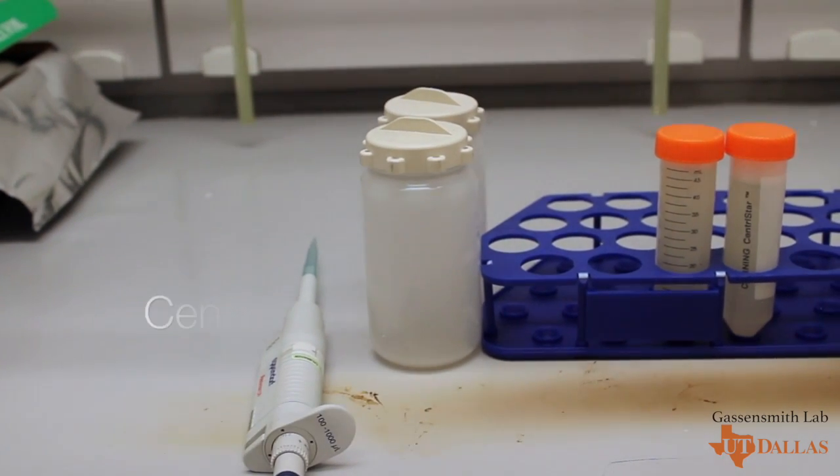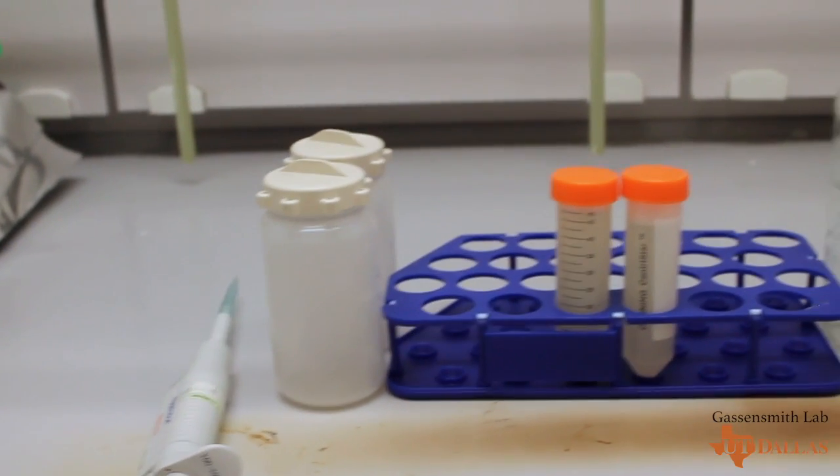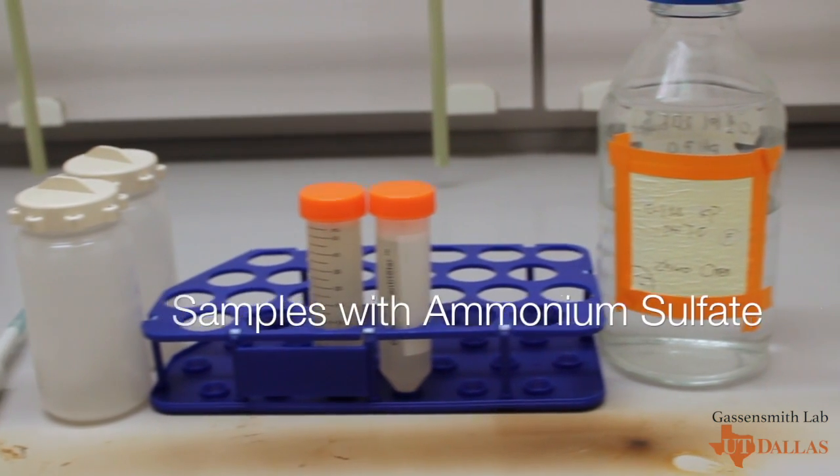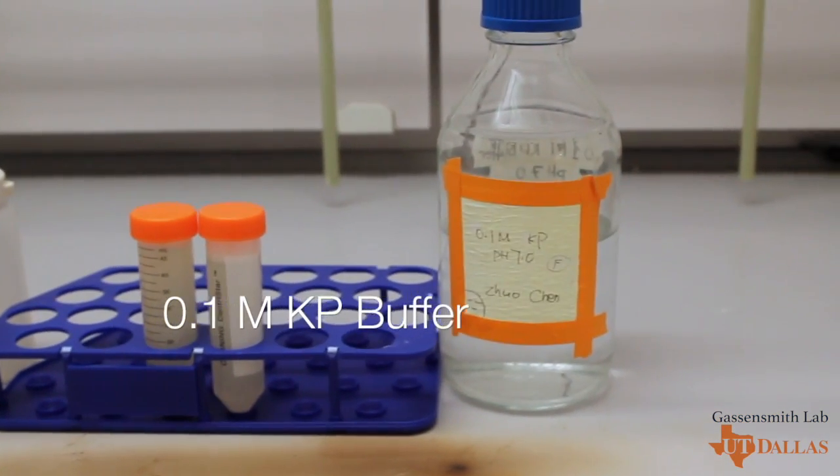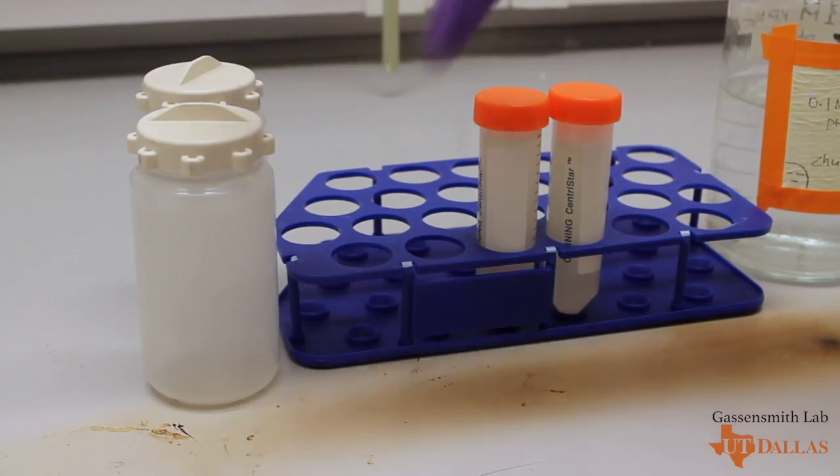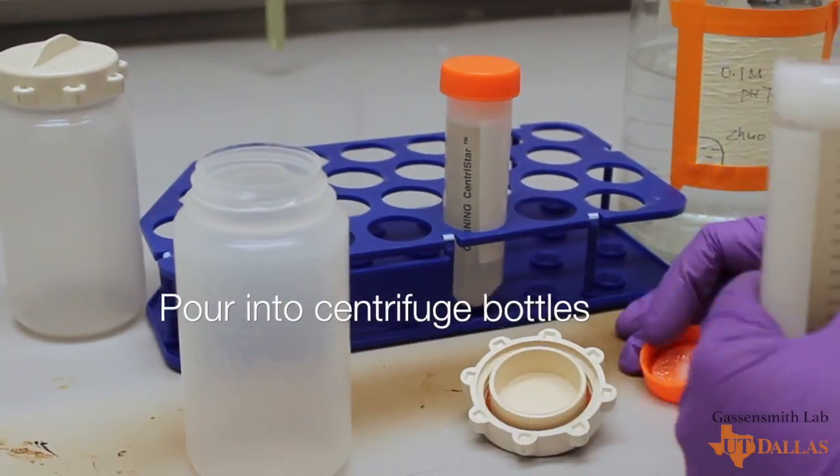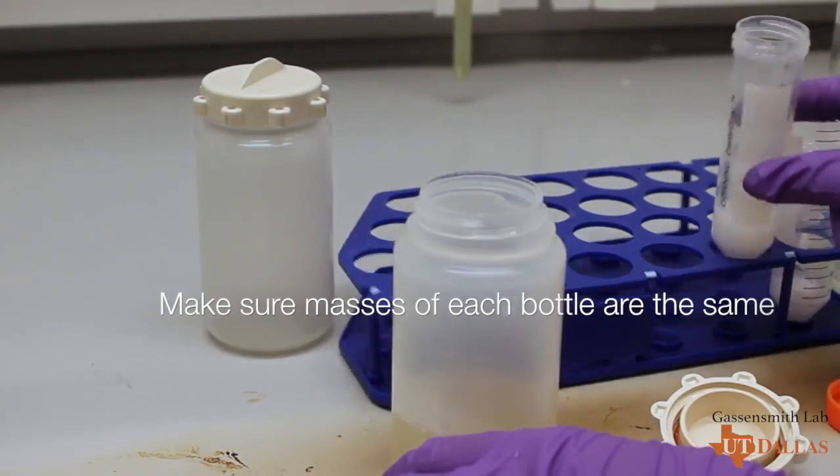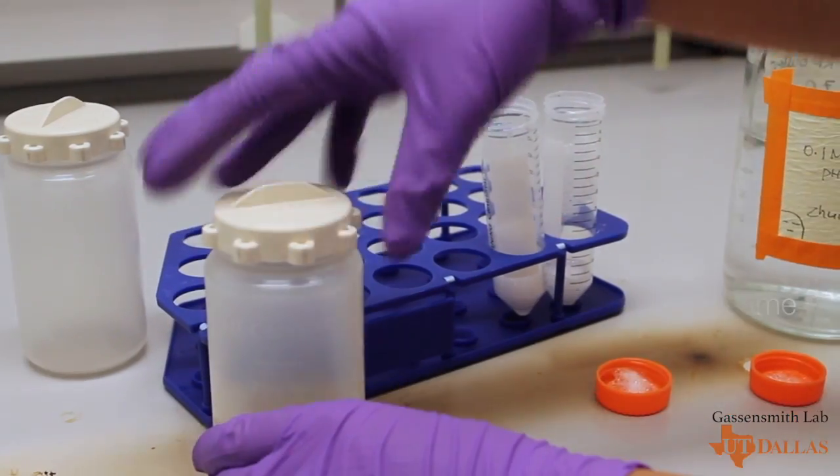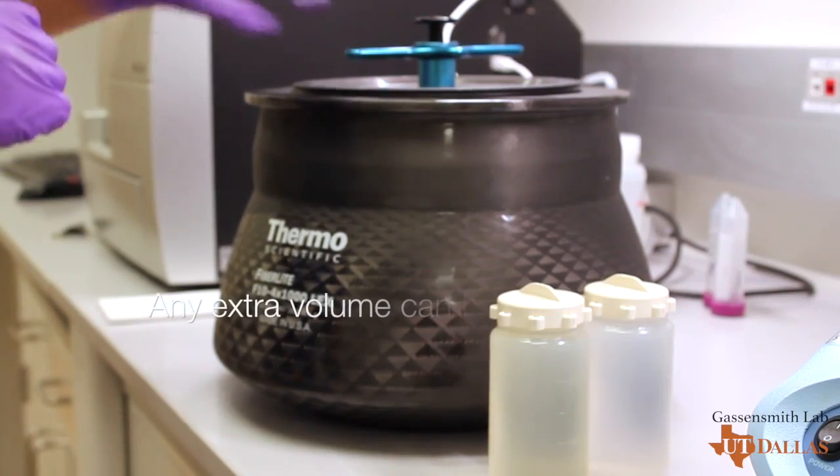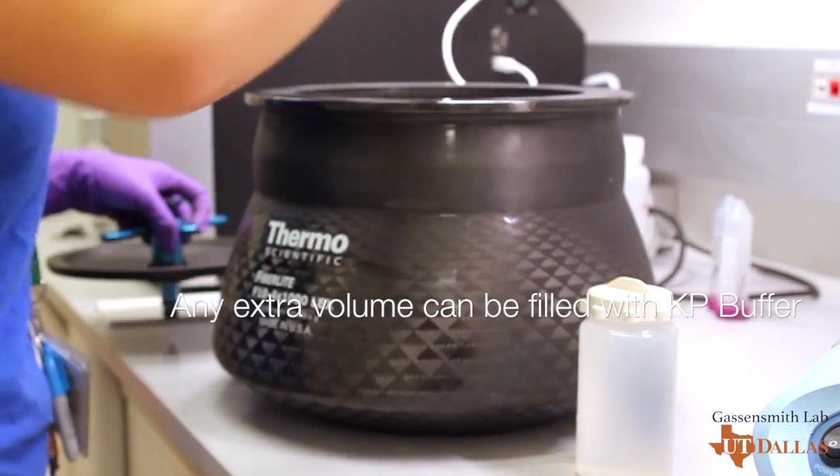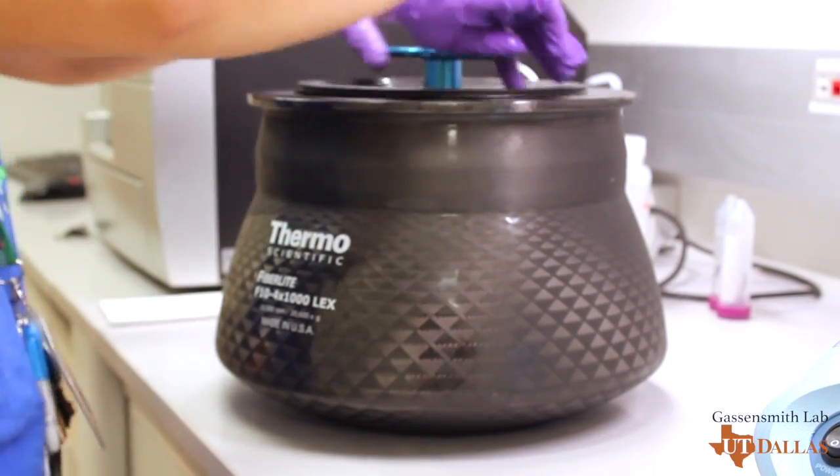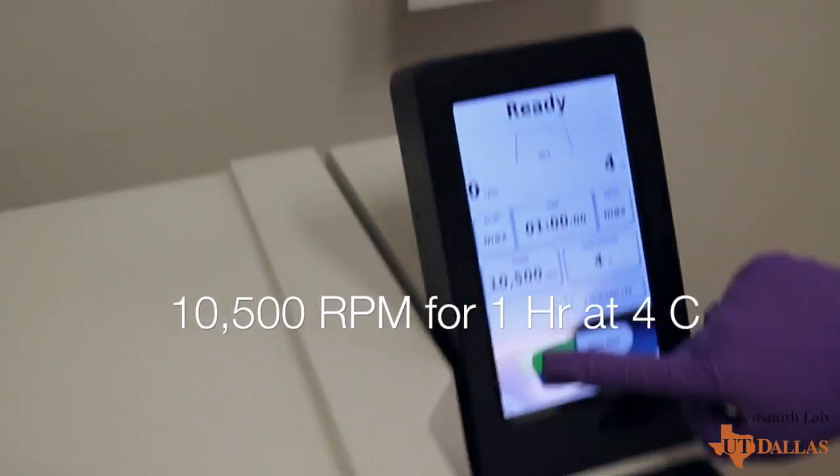Place these tubes on a rotisserie in the cold room for 1 hour to allow them to fully dissolve. For the next step, we'll be centrifuging. You'll need centrifuge bottles, your samples, and KP buffer. Pour the samples into the bottle and make sure they are of equal mass. Any extra space in the bottle can be filled with KP buffer. Centrifuge for 1 hour at 10,500 RPM and 4 degrees Celsius.